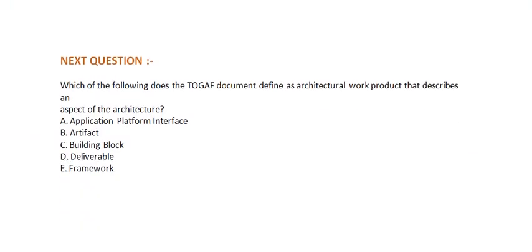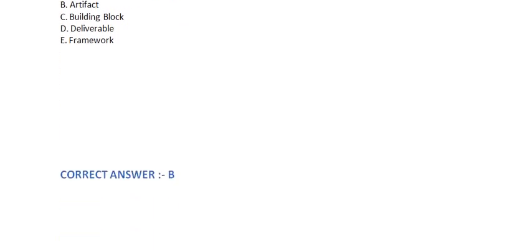Next question: Which of the following does the TOGAF document recommend to define as an architectural work product that describes an aspect of the architecture? Option A: Application Platform Interface. Option B: Artifact. Option C: Building Block. Option D: Deliverable. Option E: Framework. The correct answer is Option B.